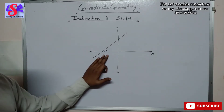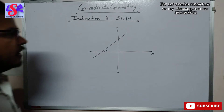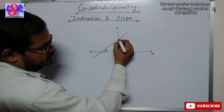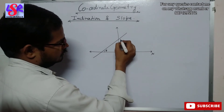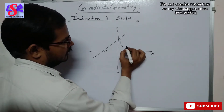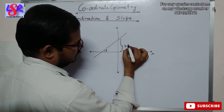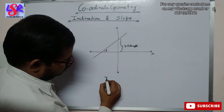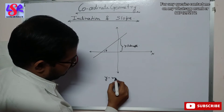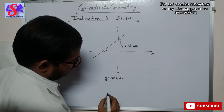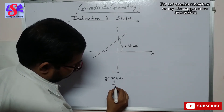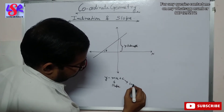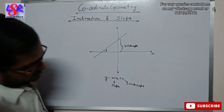Now if we have a line in which theta is the inclination of the line, this distance is the point where it is touching the y-axis or origin. This distance we call the y-intercept. And the line equation is y equals to mx plus c, in which m is the slope of the line and c is the y-intercept.